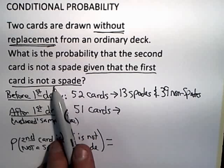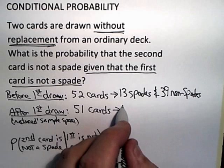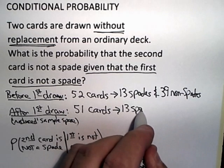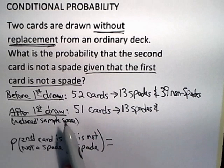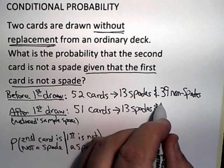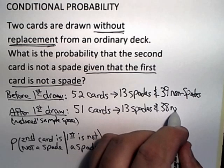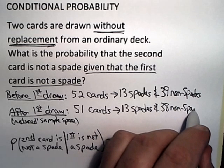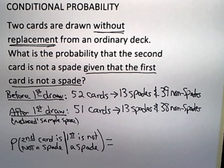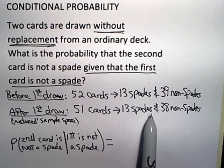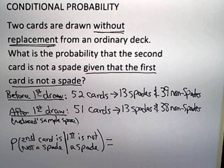Now the first draw was not a spade. So even after the first draw, there are 13 spades remaining in that deck. But since what was drawn out was not a spade, there must be 38 non-spades remaining in the deck. And again, 38 plus 13 is 51. And this is what I call the reduced sample space.